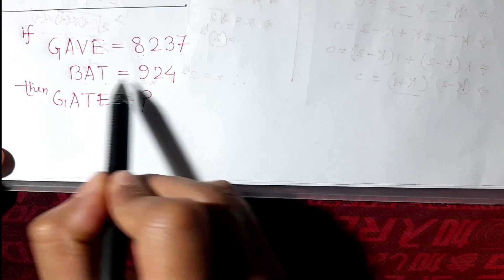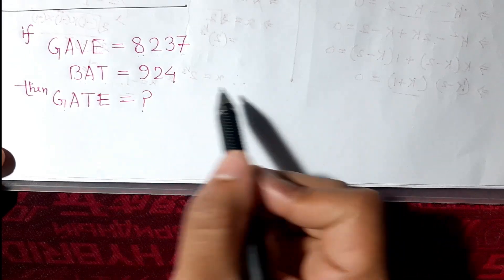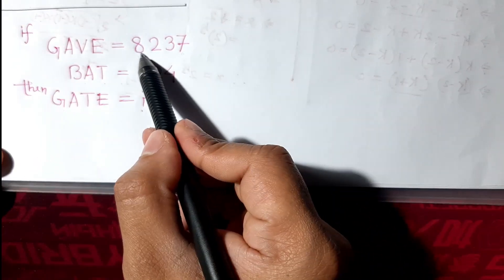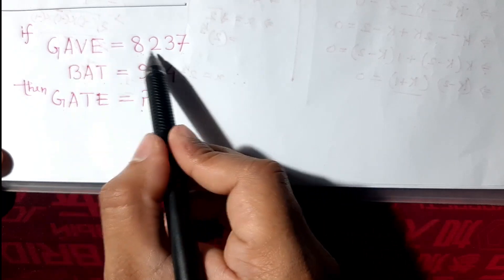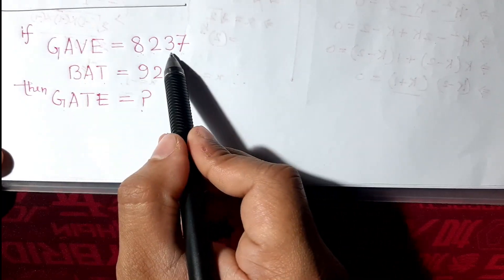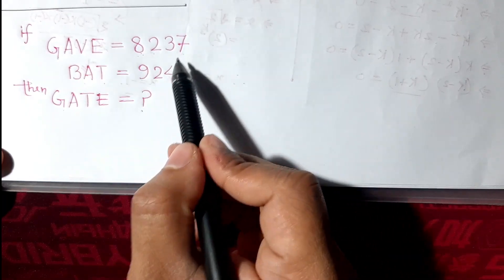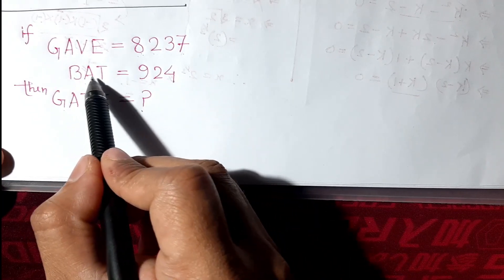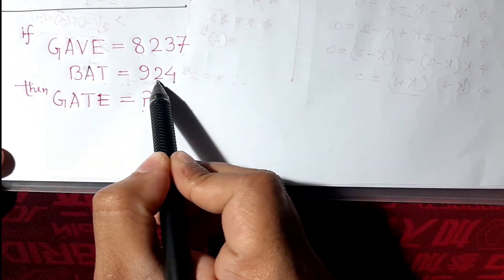So G is assigned with 8, A is assigned with 2, V assigned with 3, E assigned with 7. Similarly here also. How we can know it? Because here A is 2, B is 9, and T is 4.